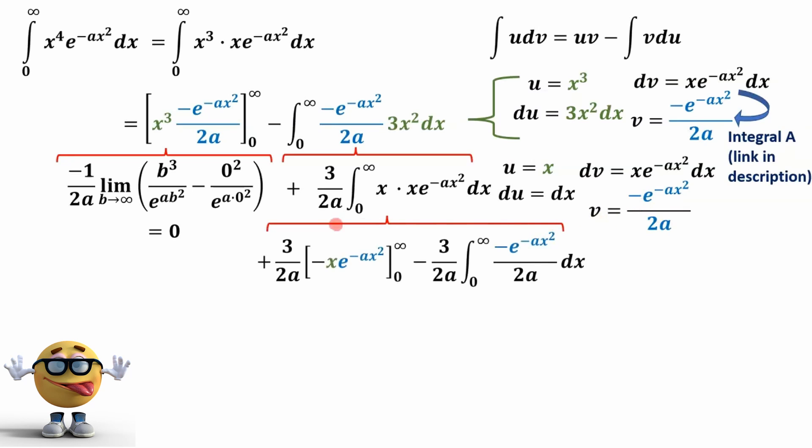We're going to substitute that in to do our integration by parts equation, where our 3 over 2a comes along for the ride. This is our u right here, which is the x. This is the v part. And we're going to go from zero to infinity. This negative comes from this negative of the v when we plug it in. And now the 3 over 2a comes along for the ride. And then this is our v right here. This is our v. And du, du is also equal to dx.